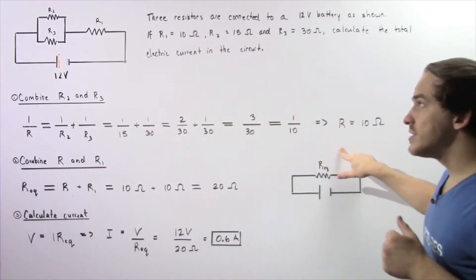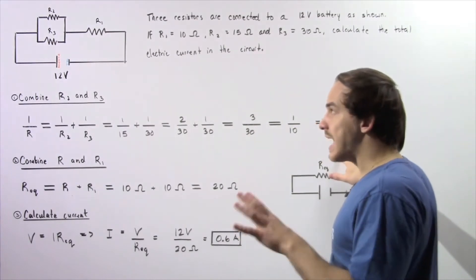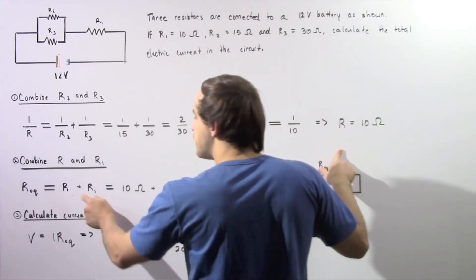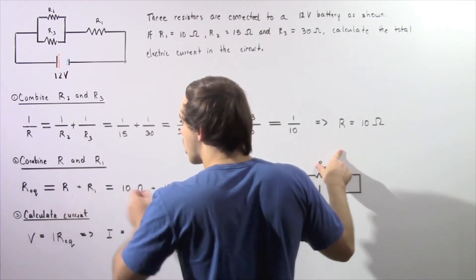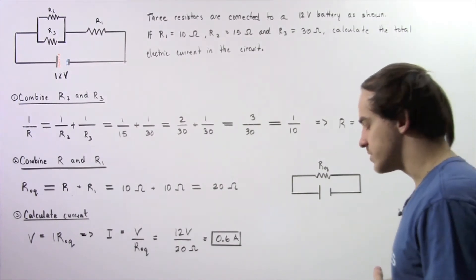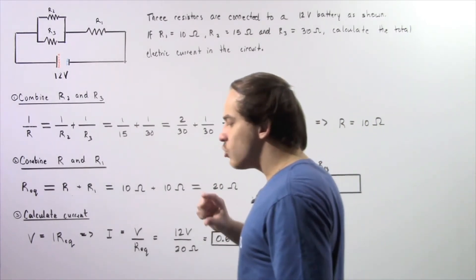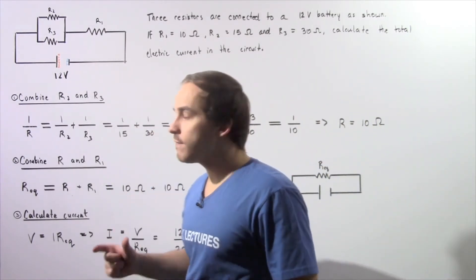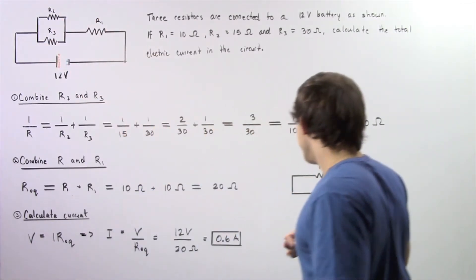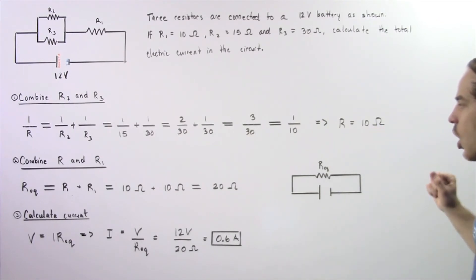So we're combining R and R1. Now, because these two resistors are in series, to calculate the equivalent resistance, we simply sum these guys up. R plus R1 is equal to 10 ohms plus 10 ohms gives us 20 ohms. So we see the equivalent resistance of the resistor that replaces all these resistors is equal to 20 ohms, and is given by Req.